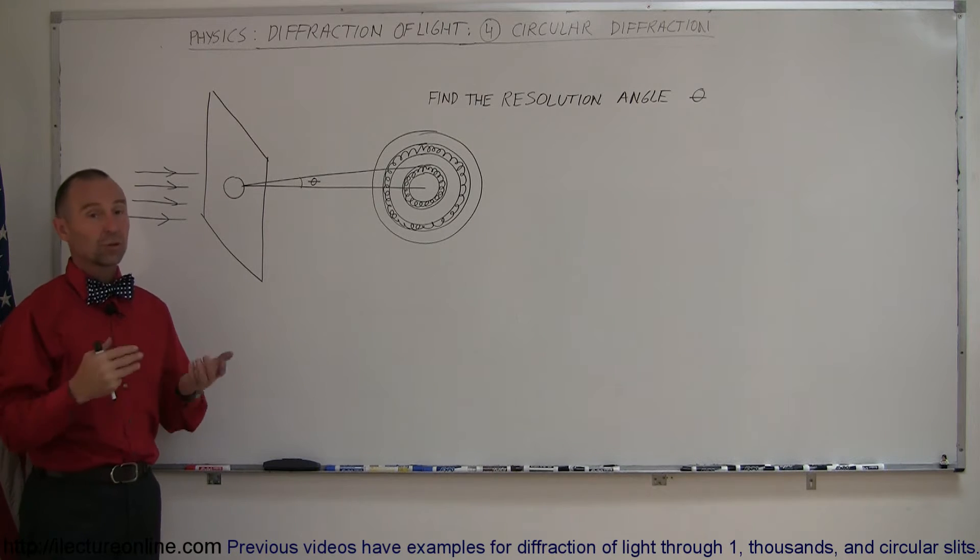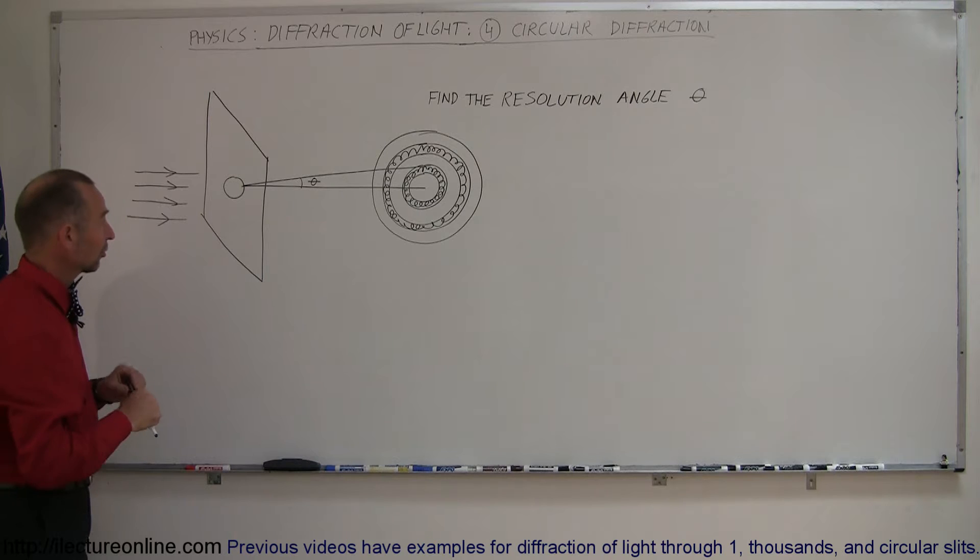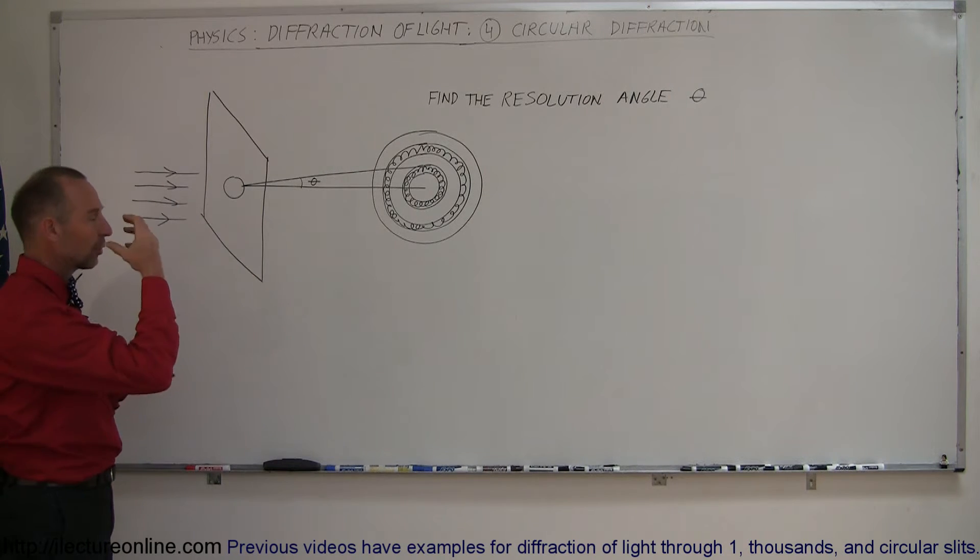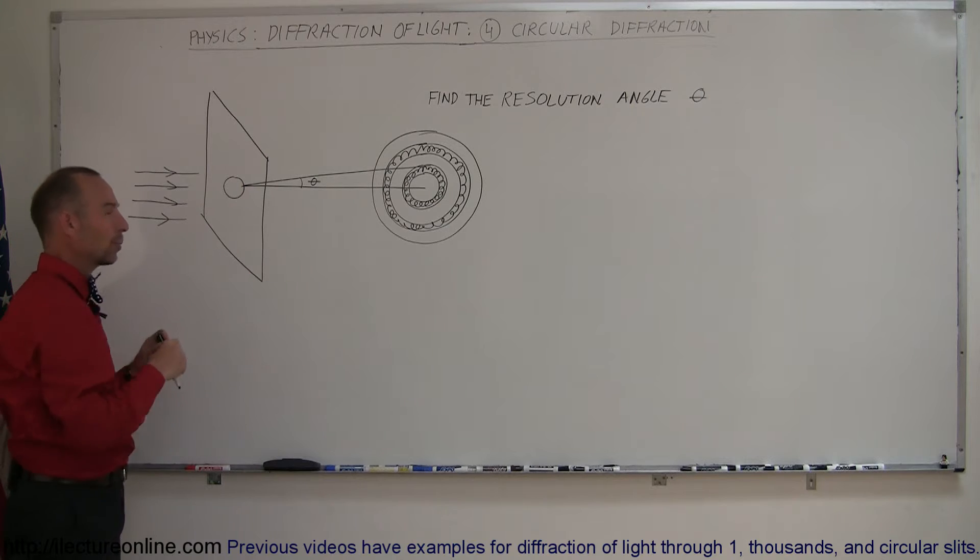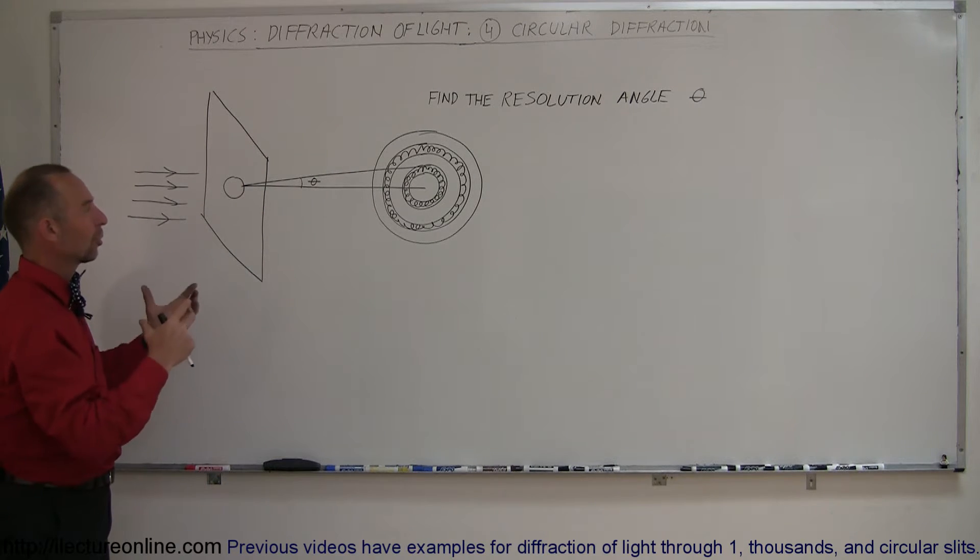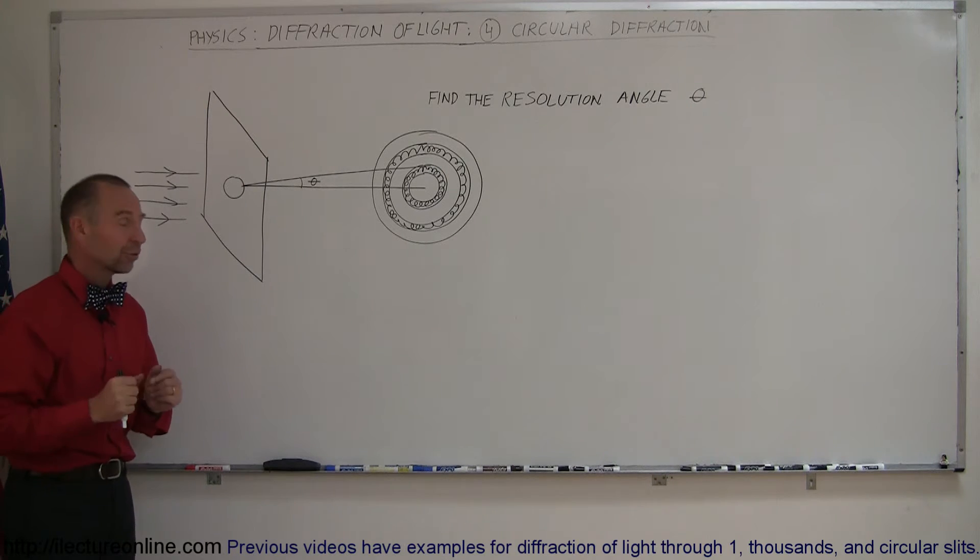Most optical instruments, including the human eye or the eyes of any animal or fish, tend to be circular. We look through light that shines through our eyes, goes through a circular opening. Cameras have circular openings, and telescopes have circular objective lenses and objective mirrors.